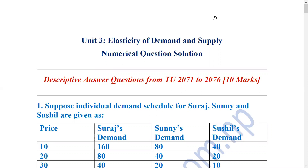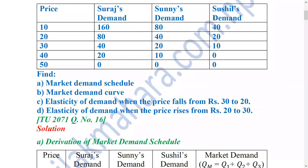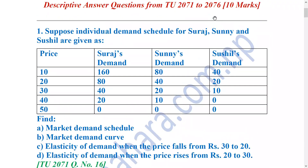In 2071, 2075 and 2076, there will be descriptive answers. In 2071, there will be three questions. The first question: suppose individual demand schedule for Suresh, Sony and Sushil are given.